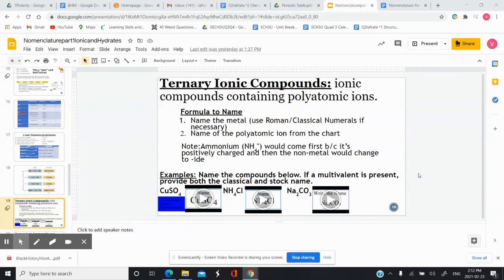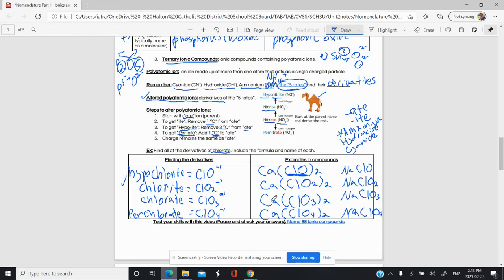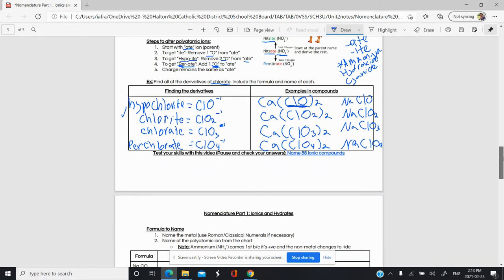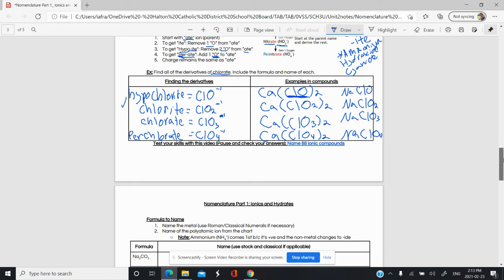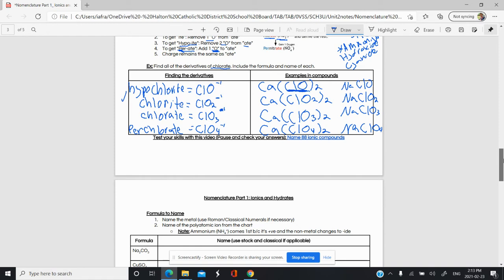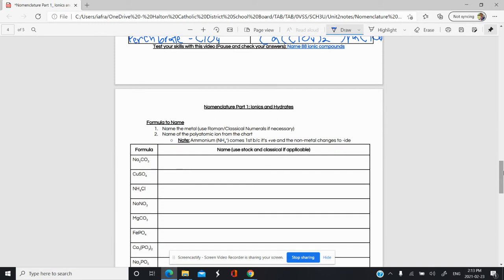In this video, we're going to name and write formulas for ternary ionic compounds. We know how to find derivatives for polyatomic ions. Now that we know how to find those and how to name most polyatomic ions, let's take a look at how we apply this to naming and writing formulas.